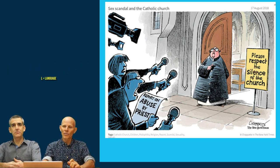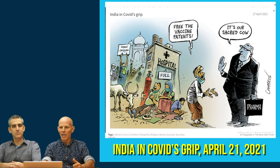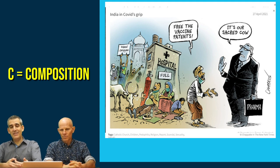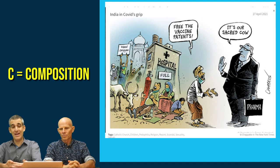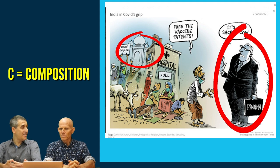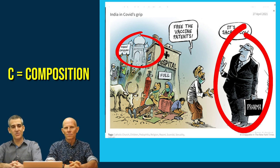We have a second cartoon to look at, from during COVID, called 'India's COVID Grip.' This cartoon was made in April 2021, so quite recent. Again, using our mnemonic — for the composition, this is a really interesting shot, because it appears to be a mid shot but can be interpreted as a long shot. I can see the sinister character representing big pharma on the right-hand side — he's the most prominent figure in the foreground and the graphic weight takes me there. In the background, I can see the Taj Mahal far off in the distance, used to indicate we are in India. The positioning of characters sets up a dichotomy between the haves and the have-nots.